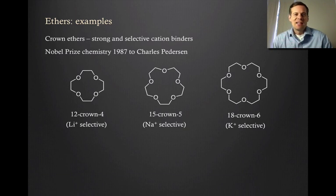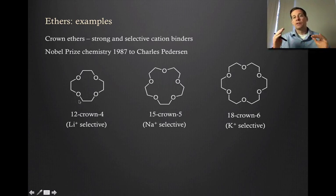One of the most interesting classes of ethers are a group of molecules known as the crown ethers. These turn out to be very strong and very selective binders of cations. This work resulted in a Nobel prize in chemistry for Charles Pedersen. I show the structure of three of the more common crown ethers. You can see they basically look like crowns. They are polyethers that are tied up in a ring. The naming system goes: the first number is how many atoms are in the ring, and the last number is how many oxygen atoms there are. So 12-crown-4 has 12 atoms with four oxygens.